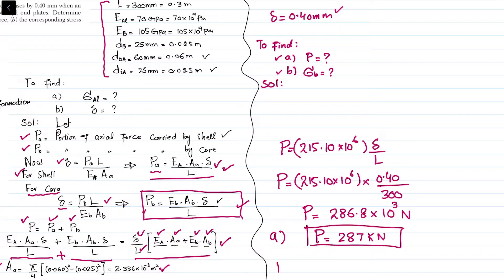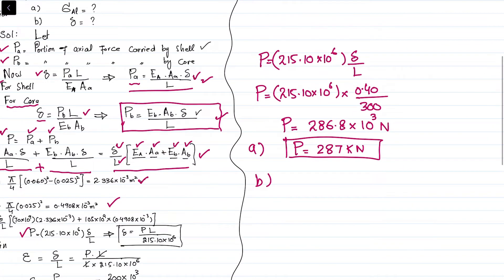In part B, it has been asked to find the stress in brass. We know that stress in brass equals load taken by brass divided by area of brass, which equals strain times modulus of elasticity of brass.